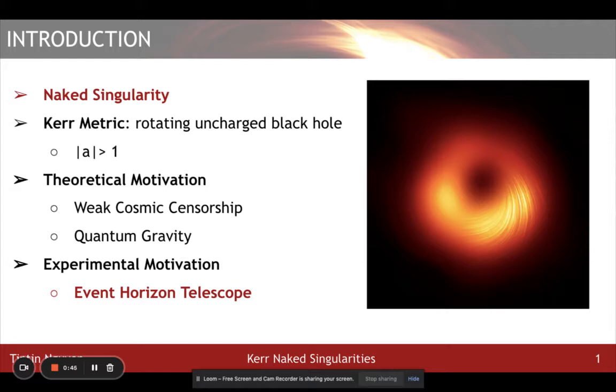Because we have observed Kerr black holes numerous times in nature, it is the most natural way to construct naked singularities by overspinning the black hole to a spin higher than its mass. I normalize its mass as 1.